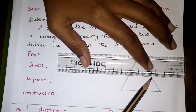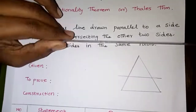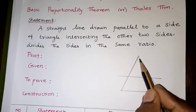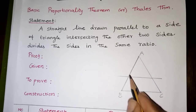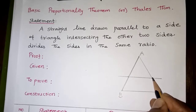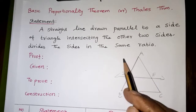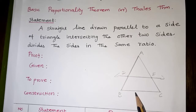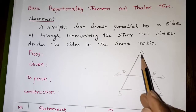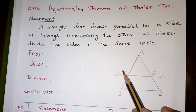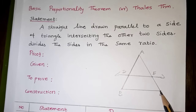Once you draw a line parallel to the side of the triangle, it divides the other two sides in the same ratio. The triangle is named A, B, C and the points are named D and E. The statement means: a line drawn parallel to the side of a triangle divides the other two sides in the same ratio. So AD divided by DB equals AE divided by EC.